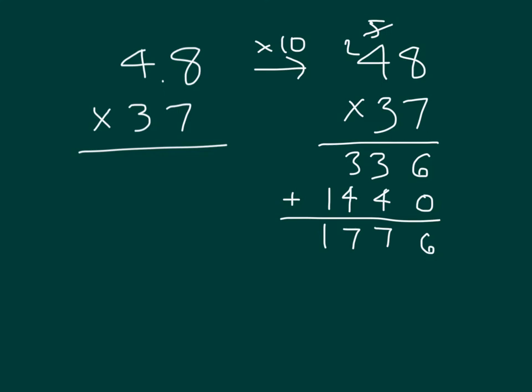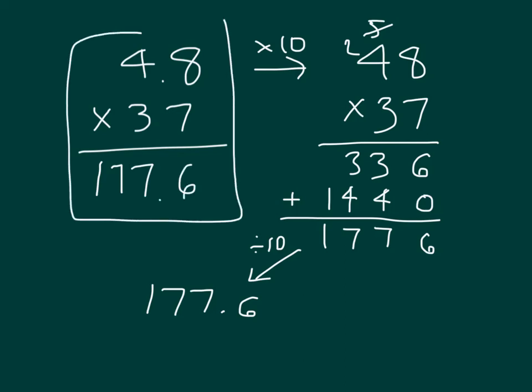So what we do, is we take this number and divide it by 10. Dividing it by 10, we would get 177.6. So all we did is we multiplied by 10 first, and then we divide it by 10, so that we'd have that same answer that we should have in the first place, of 177.6, which would be the answer for 4.8 times 37.